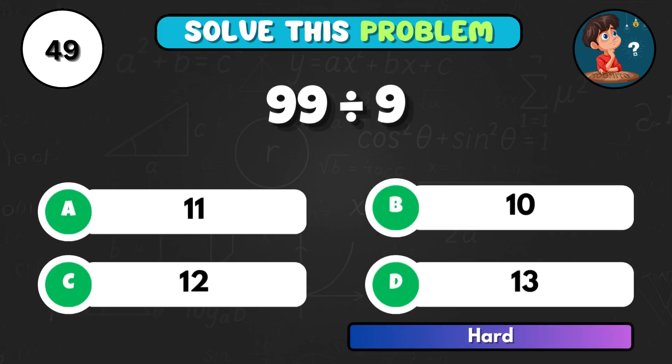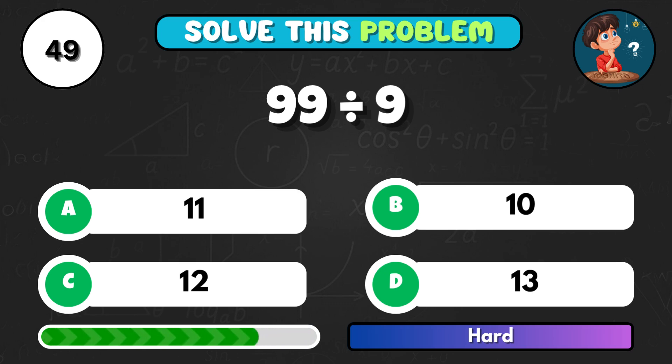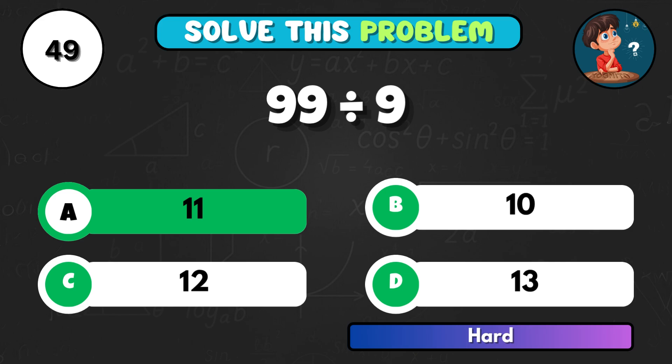99 divided by 9, what's your answer? That's A equals 11.